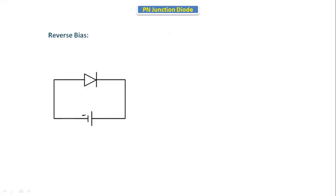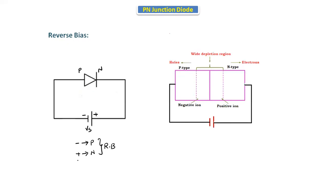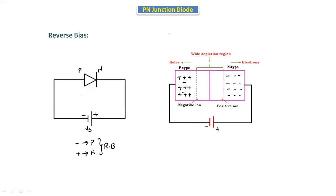In reverse bias, the negative terminal of the battery is connected to the P-type and the positive terminal is connected to the N-type — the diode is then in reverse bias condition. In the P-type the majority carriers are holes and the minority carriers are electrons; in the N-type the majority carriers are electrons and the minority carriers are holes. Between the P-type and N-type there is a depletion region layer.